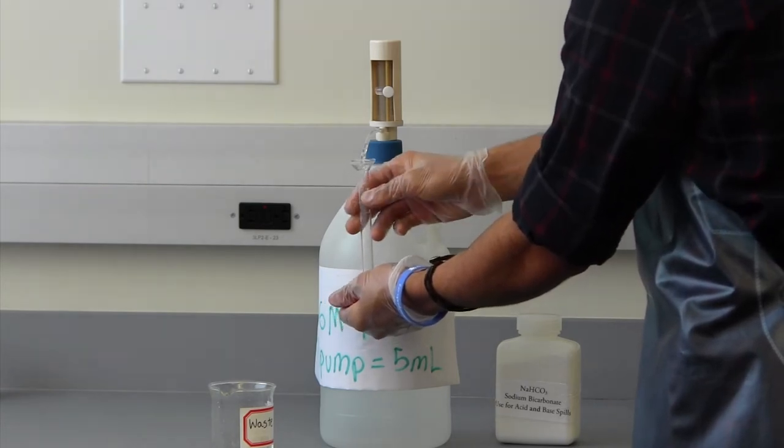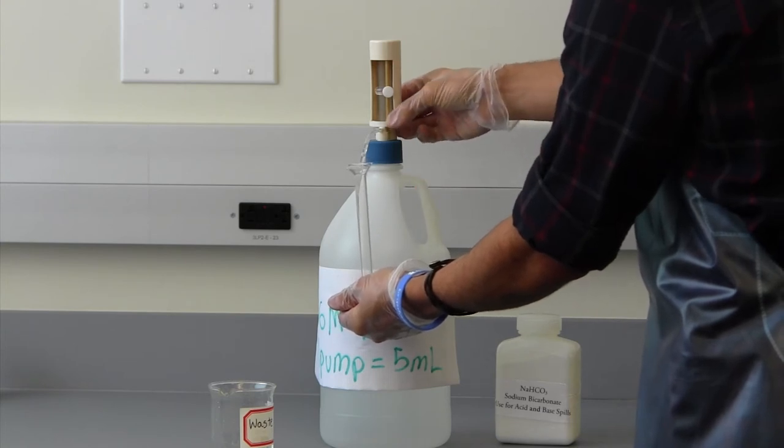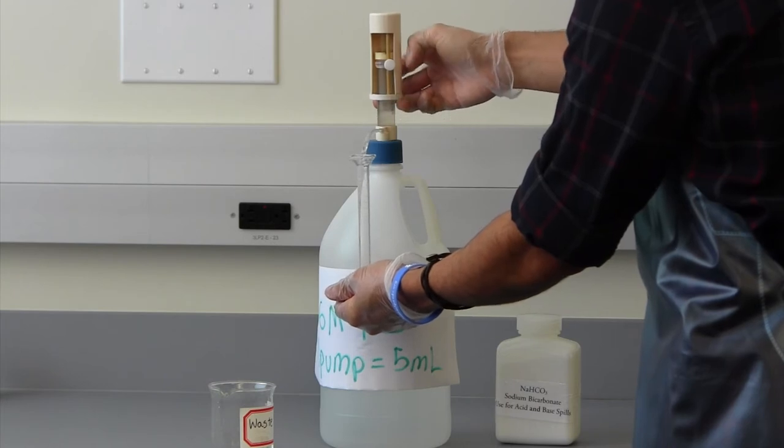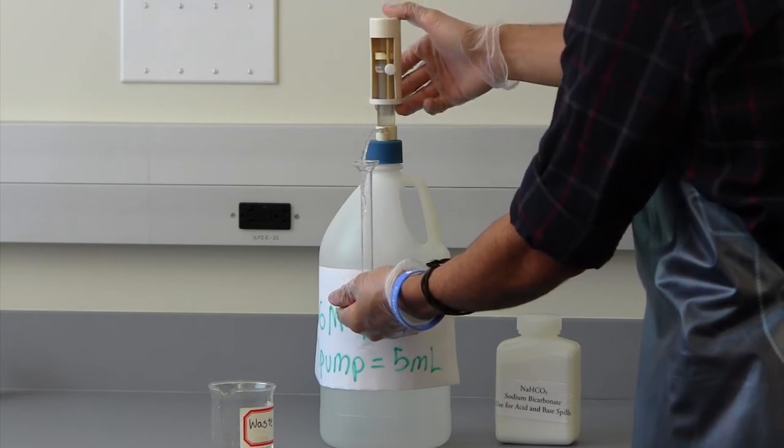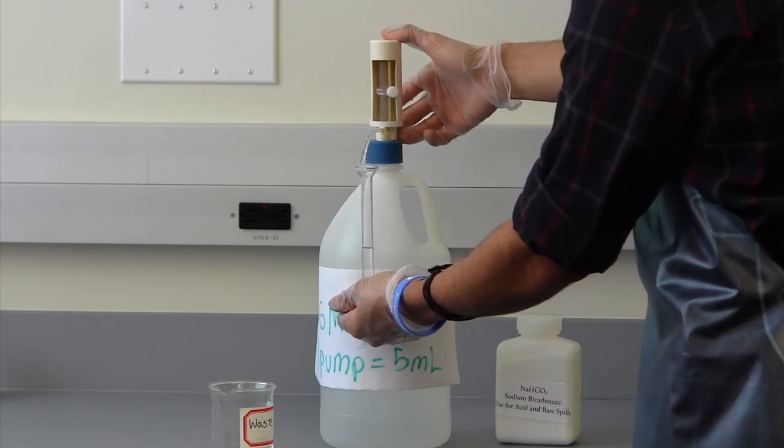To pump, one will carefully lift the plunger to its maximum height. Once the plunger is at max height, one slowly presses the plunger down completely. Now you have correctly pumped reagent into your graduated cylinder.